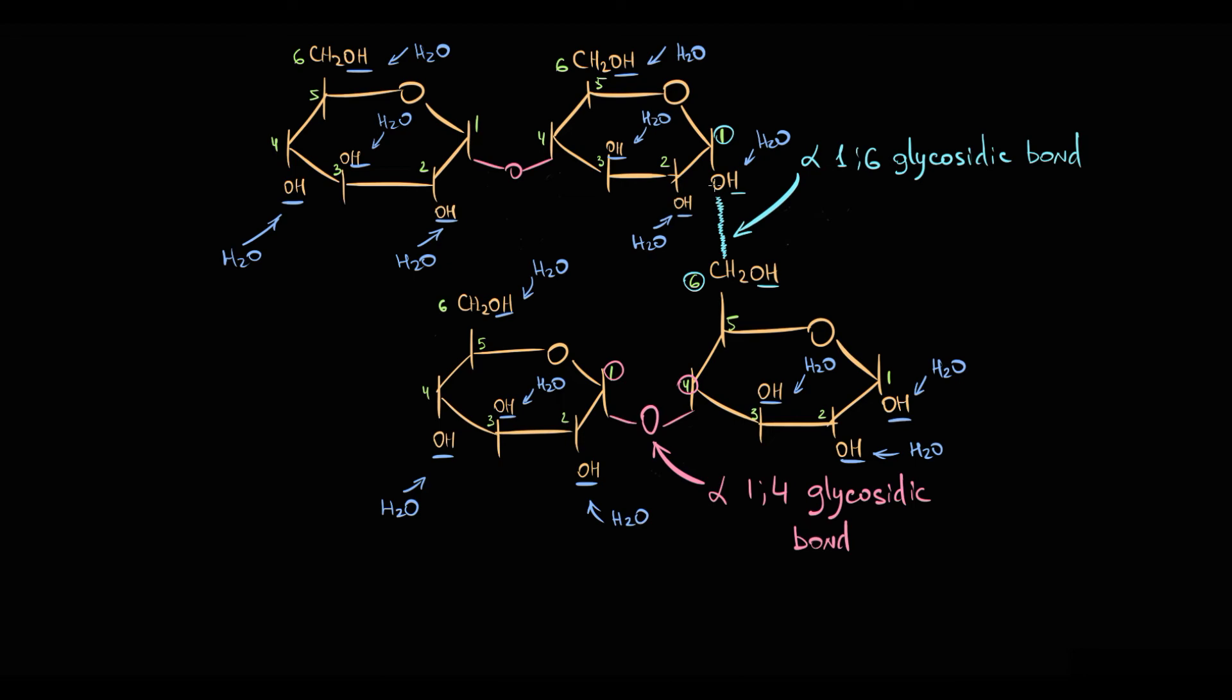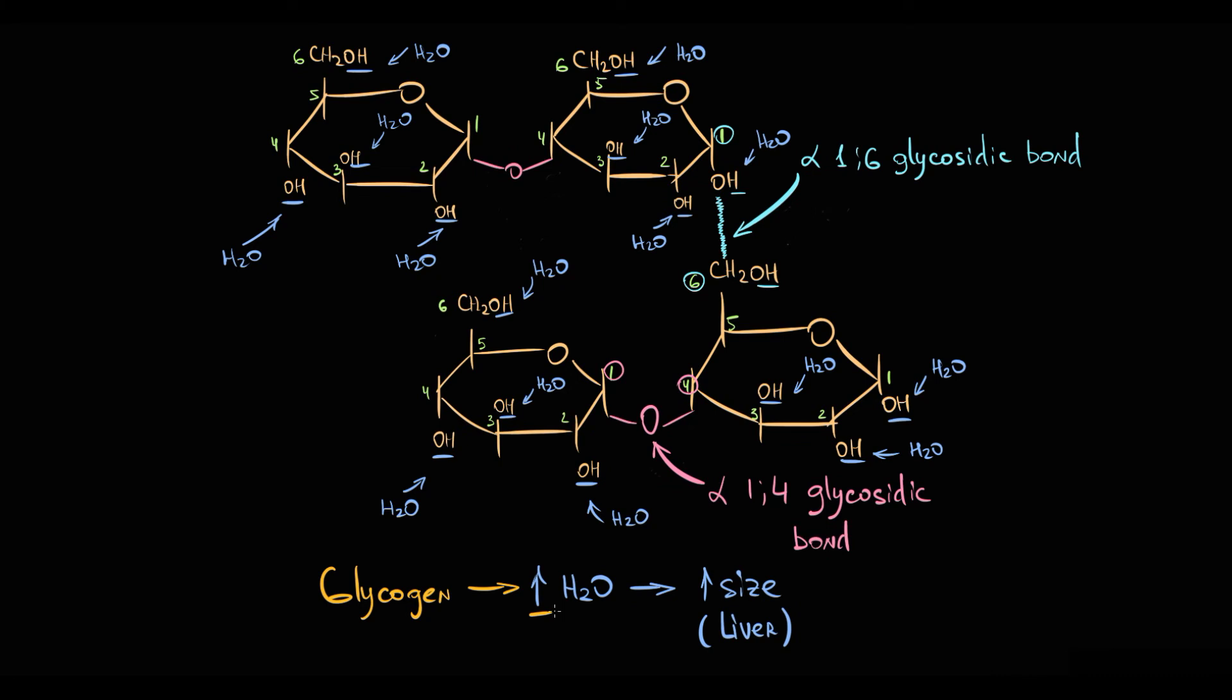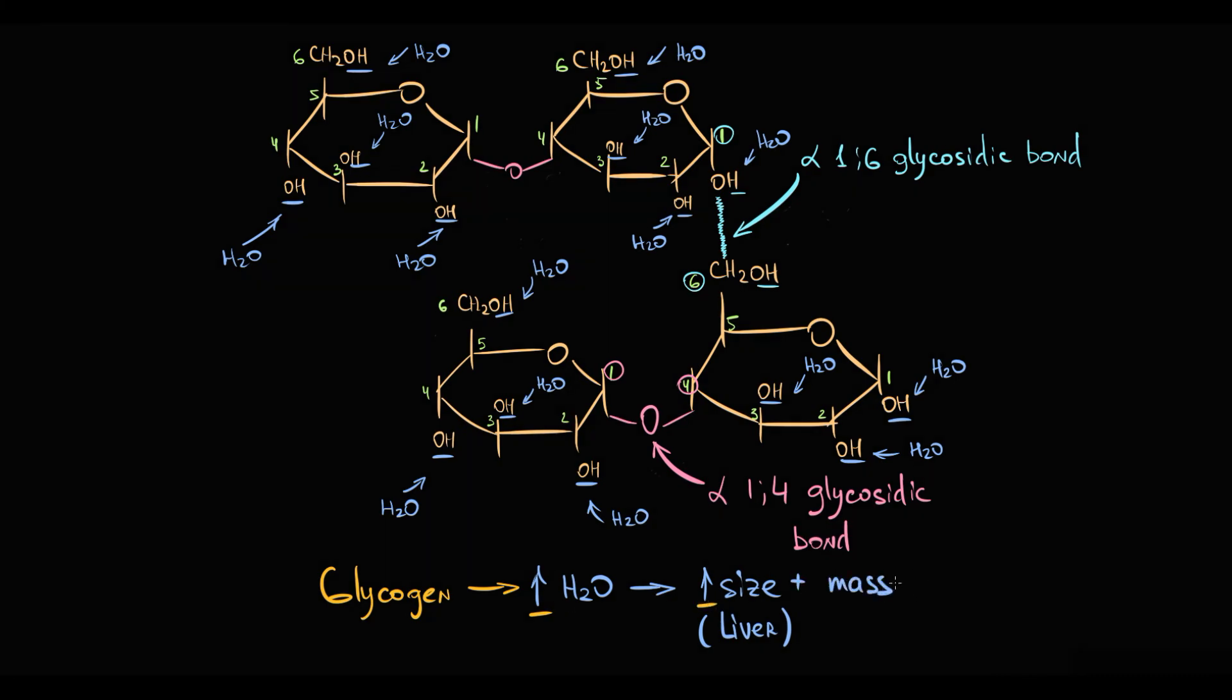And the major problem here is that with increasing amount of water, the size of the liver increases. So the higher the amount of glycogen in the liver tissue, the higher the amount of water, so the bigger becomes the mass and the size of the liver tissue.